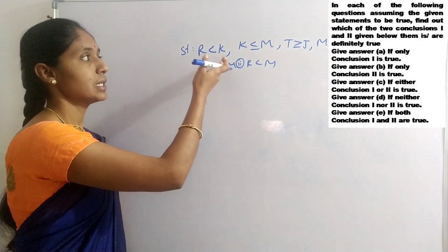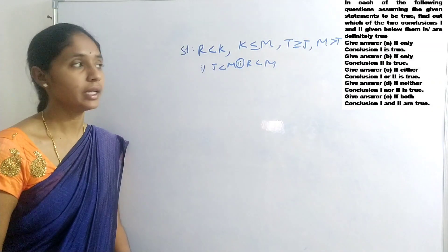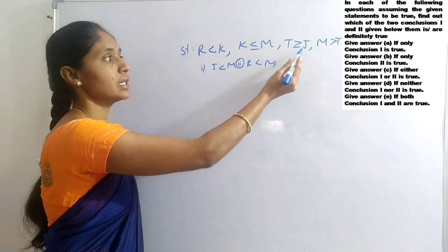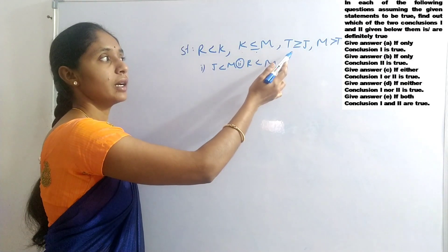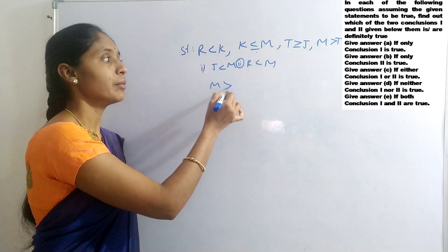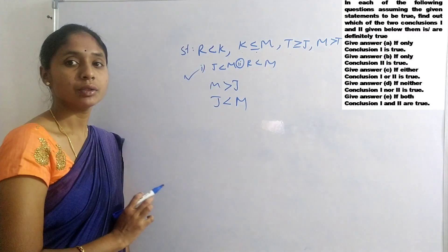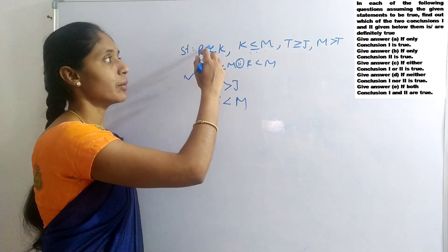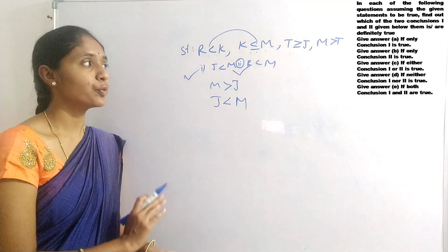Question 9: R less than K; K less than R equals to M; T greater than R equals to J; M greater than T. Conclusions: J less than M; R less than M. For J and M: tracing K less than R equals to M greater than T and T greater than R equals to J, we get M greater than J, so J less than M — true. For R less than M: R less than K less than R equals to M, common symbol is less than, so R less than M — true. Both conclusions 1 and 2 are true.